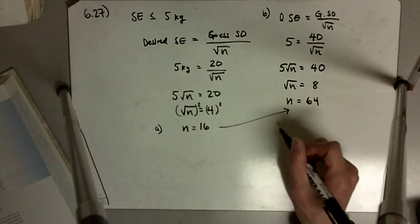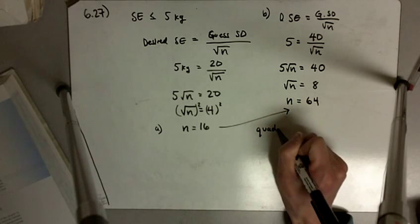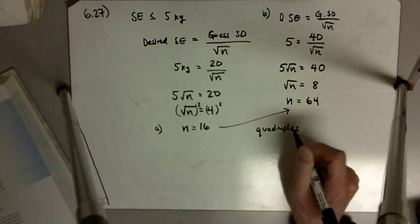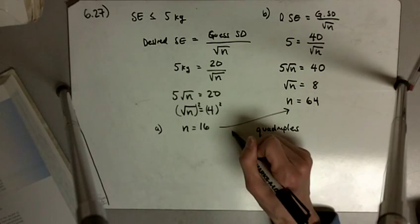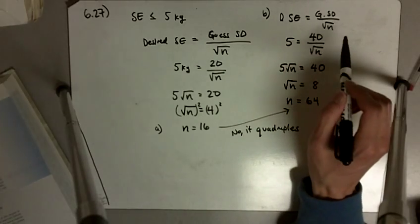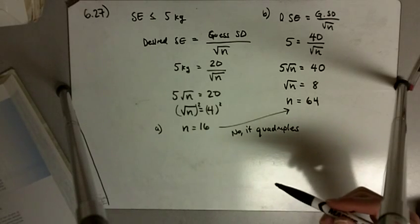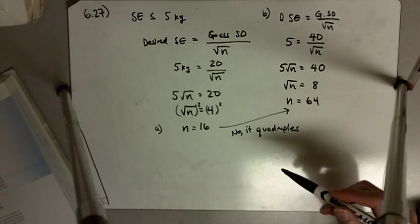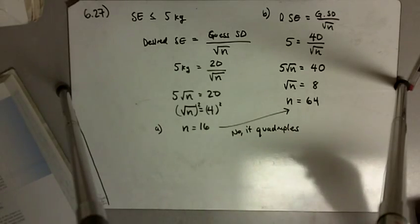So here it does not double, but it actually quadruples. So B, the answer is no, it quadruples. So if you double the size of the standard deviation, you need to have 4 times as many cattle in your sample in order to compensate for that difference.